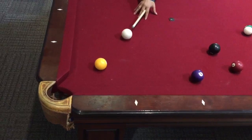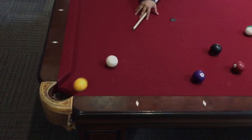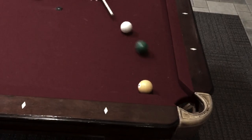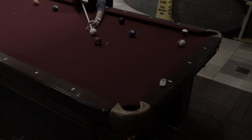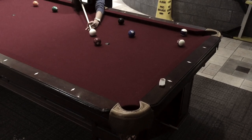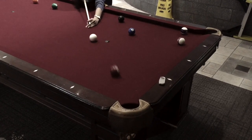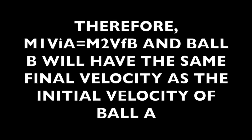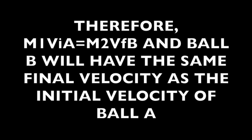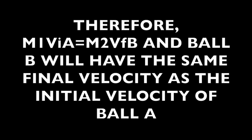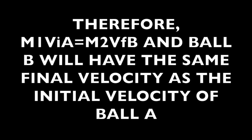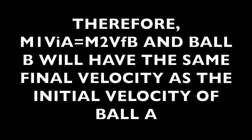In a perfectly elastic situation, in order for the ball to go into the pocket, all of the kinetic energy of the white ball must completely transfer to ball b. This means that the final velocity of the white ball must be zero. Therefore, m1 v initial a equals m2 v final b, and ball b will have the same final velocity as the initial velocity of ball a.